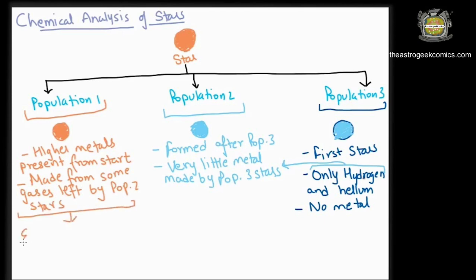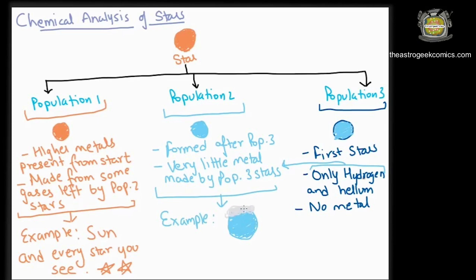Sun and almost every star we see is a Population 1 star. Methuselah, the suspected oldest star in the universe to be discovered is a Population 2 star. I have actually made a comic on it on my Instagram so you can check it out later and the number of the comic will be mentioned in the description below.